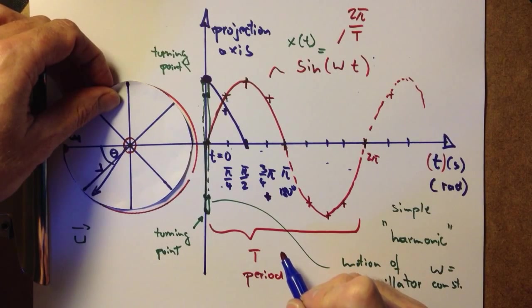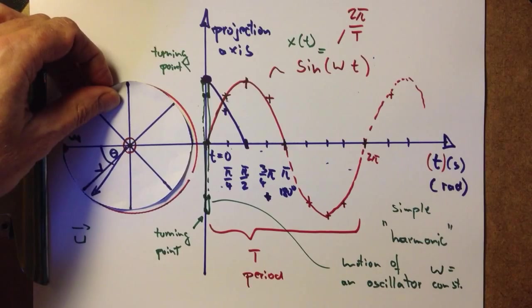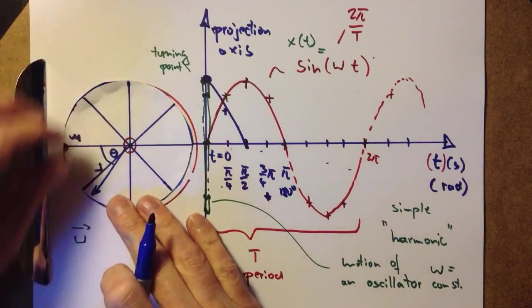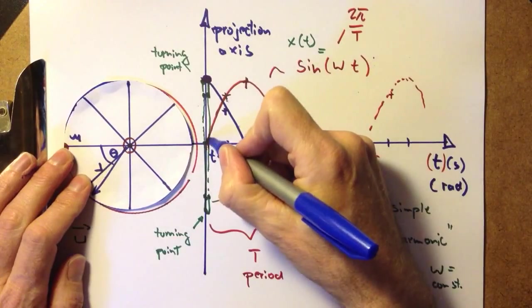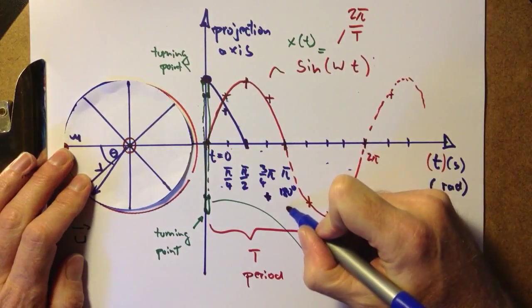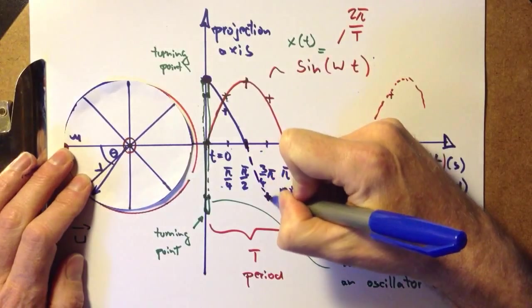So here, the speed should be zero. Now, we're not at the turning point. We're going through the zero position, so we have maximum speed, but that speed is negative. So that's this point. We're going through the zero position.